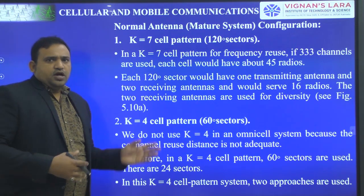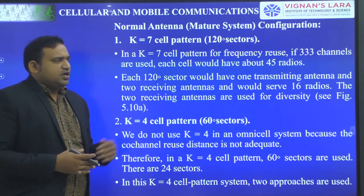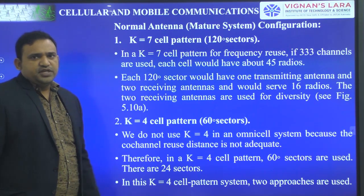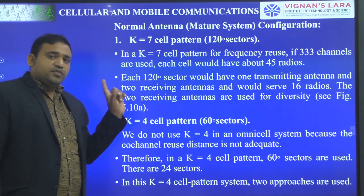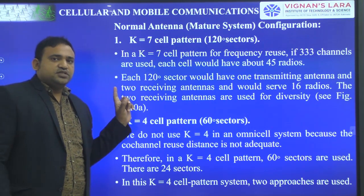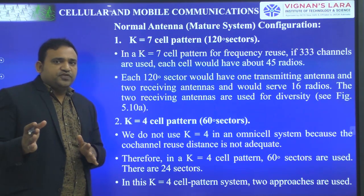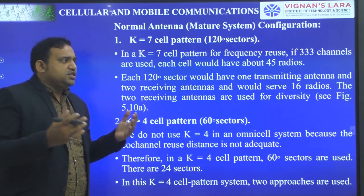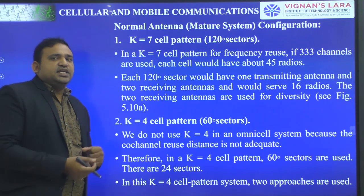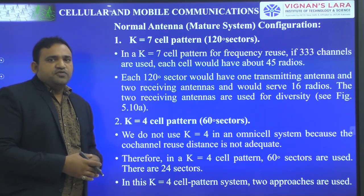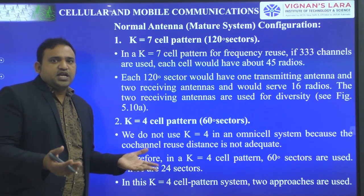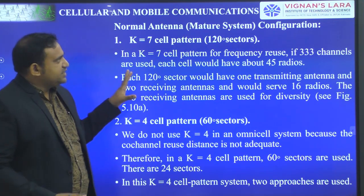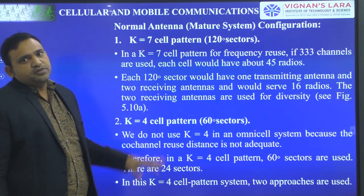In a normal or general mature system configuration — previously in omnidirectional antennas we discussed about startup configuration — since we are decreasing the interference and going to directional antennas, we are now seeing it as a mature system configuration.